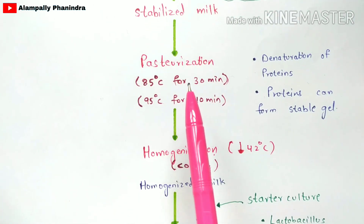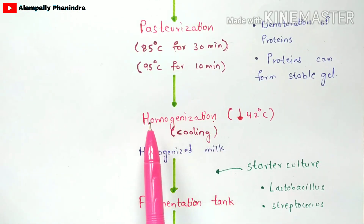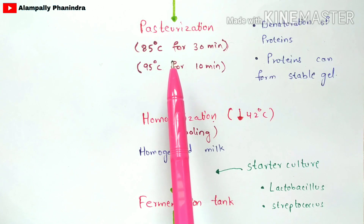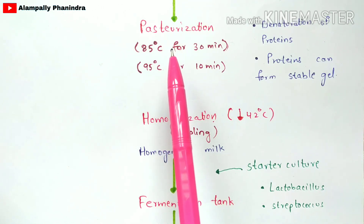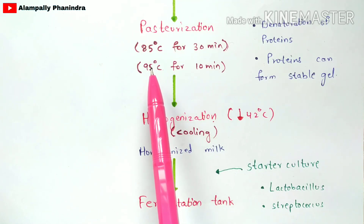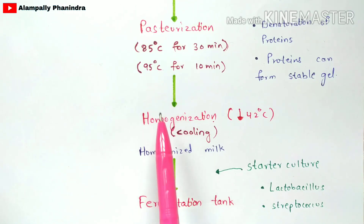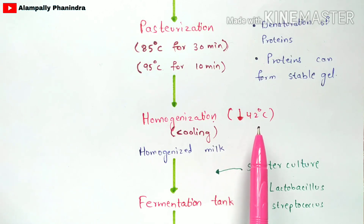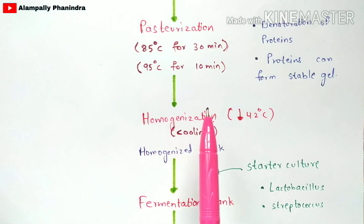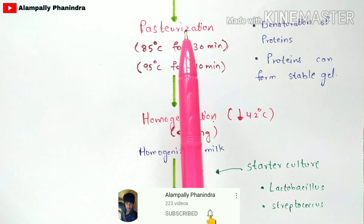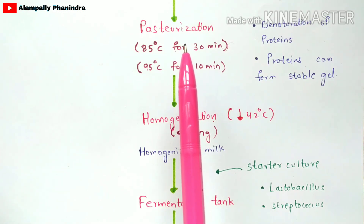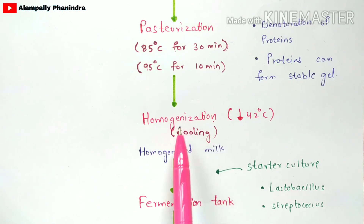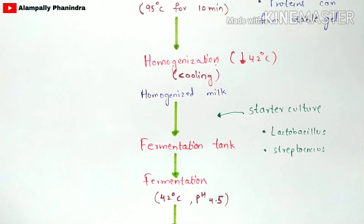After pasteurization, we perform homogenization. In homogenization, you cool the milk, because high heat was applied during pasteurization — at 85 to 95 degrees Celsius. In homogenization, you cool the milk down to 42 degrees Celsius. So the steps so far are: take milk, stabilize it, pasteurize it, then homogenize it by cooling to 42 degrees Celsius, producing what is called homogenized milk.